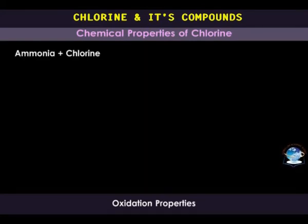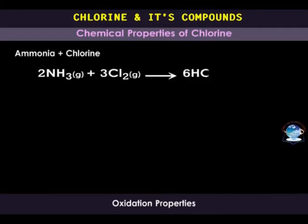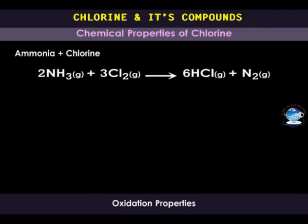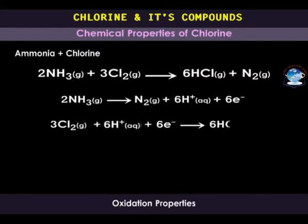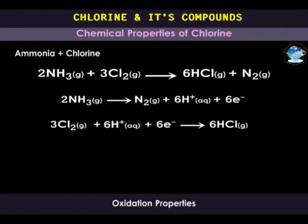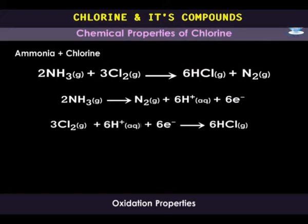We can also say that hydrogen sulfide is oxidized by losing hydrogen and chlorine is reduced by gaining hydrogen. When ignited, ammonia reacts with chlorine, forming hydrogen chloride and nitrogen. In this reaction, ammonia is oxidized to nitrogen by loss of hydrogen atoms, and chlorine is reduced by gain of hydrogen atoms. By donating hydrogen atoms, ammonia is behaving like a reducing agent, and by accepting the hydrogen atoms, chlorine is behaving like an oxidizing agent.